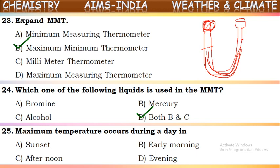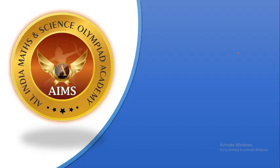Next question: maximum temperature occurs during which time of a day? In the afternoon time, the sun gives much shine. Because of that, the temperature will be much higher in the afternoon time. The maximum temperature of a day occurs in the afternoon.